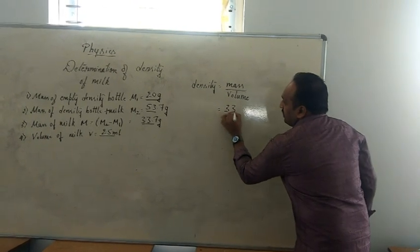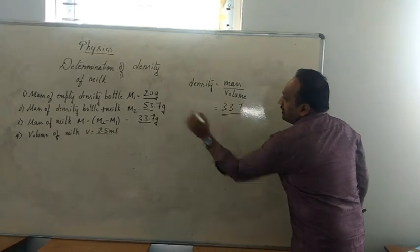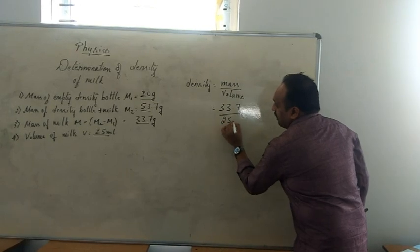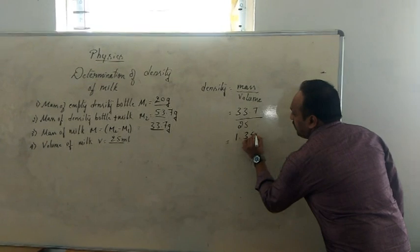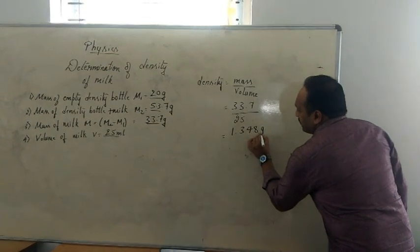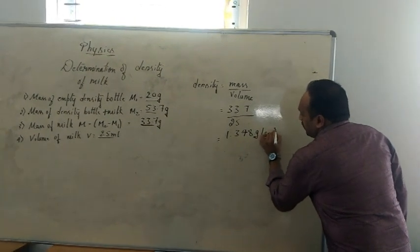That is 33.7 divided by 25. If I divide, I will get the answer 1.34 gram per centimeter cube.